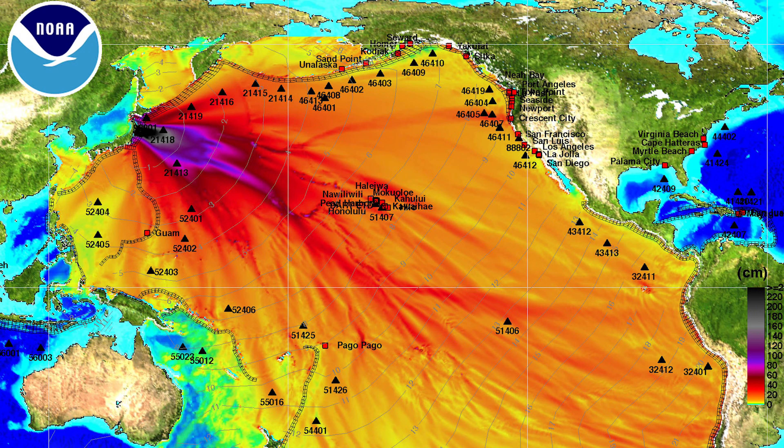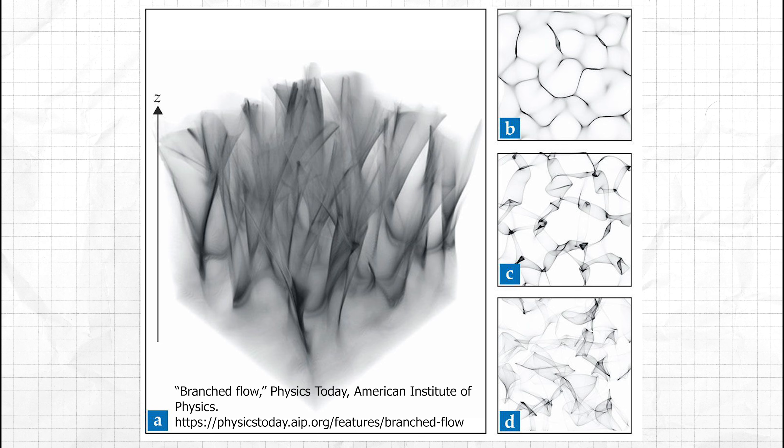Even the familiar pattern of sunlight on the bottom of a swimming pool is related. It's essentially a slice of branch flow created as sunlight passes through water with slight, smoothly varying density and depth.